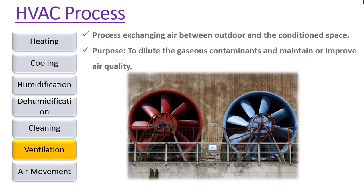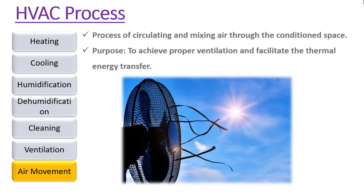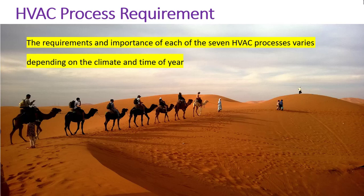Ventilation is the process of exchanging air between the outdoor and the conditioned space; its purpose is to dilute gaseous contaminants and maintain or improve air quality. Air movement is the process of circulating and mixing air through the conditioned space; its purpose is to achieve proper ventilation and facilitate thermal energy transfer. The requirement and importance of each of the seven HVAC processes varies depending on the climate and time of year. For example, dry deserts may not need dehumidification, hot climates may not need heating, and areas near the sea may not need humidification.